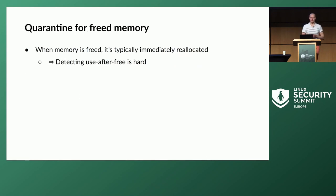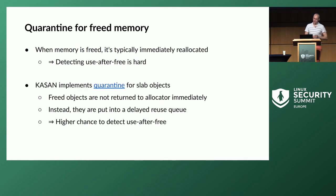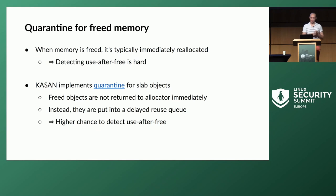KASAN also wants to detect use-after-free. Whenever memory is freed, it's poisoned as inaccessible. However, the slab allocator puts freed objects on the free list, and freed memory is unlikely to stay freed for long, making use-after-free hard to detect. So KASAN implements quarantine: whenever slab memory is freed, it gets put into a queue and its reuse is delayed — it's not returned to the allocator but kept in a KASAN-specific queue. The queue has a fixed size, about 1/32 of RAM size, allowing KASAN to detect use-after-free.